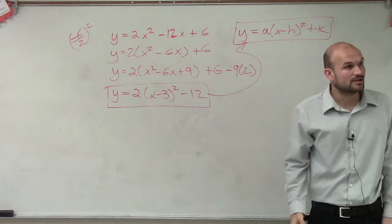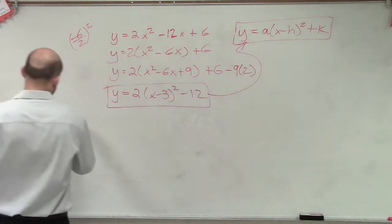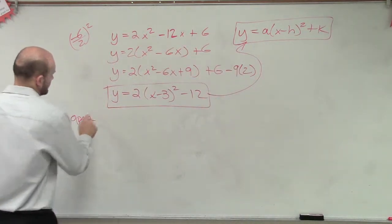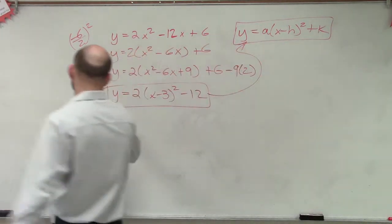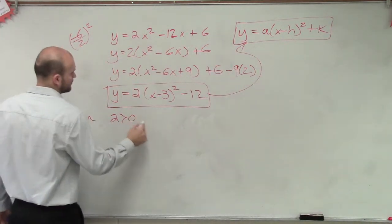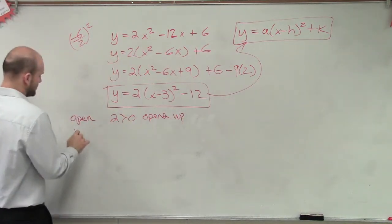Now we can graph this. But let's go and find out all the information. So first of all, let's determine how is this graph going to open. So we look at our a. And since our a is greater than 0, it opens up.